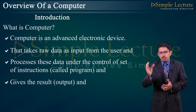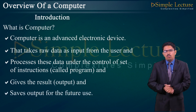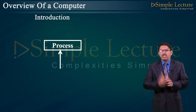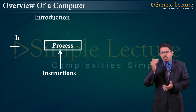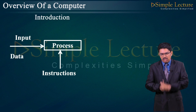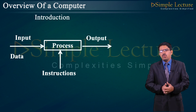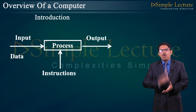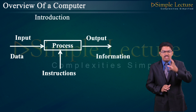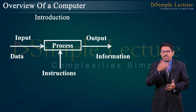The result is called output and is saved for future use. In the representation, a process is a collection of instructions. The input given to the process is called data, and the output produced on the screen is called information. The process gets the input, processes the data, executes the result, and displays the output on the screen.